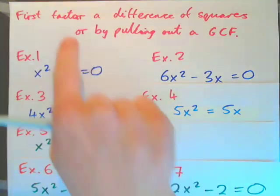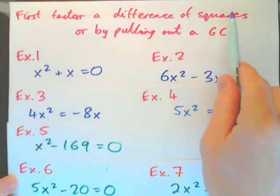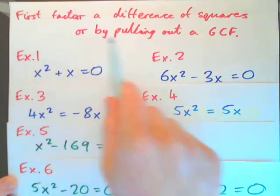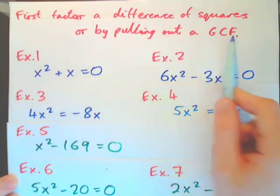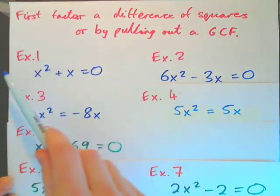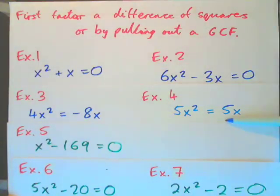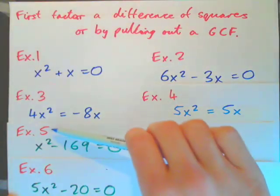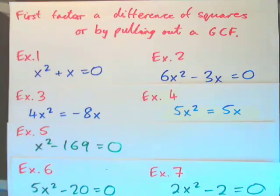In this video, we're going to first factor a difference of squares, or factor by pulling out a greatest common factor. We'll do examples 1 through 7. The first 4 involve pulling out a greatest common factor, and then examples 5, 6, and 7 use the factoring a difference of squares method.